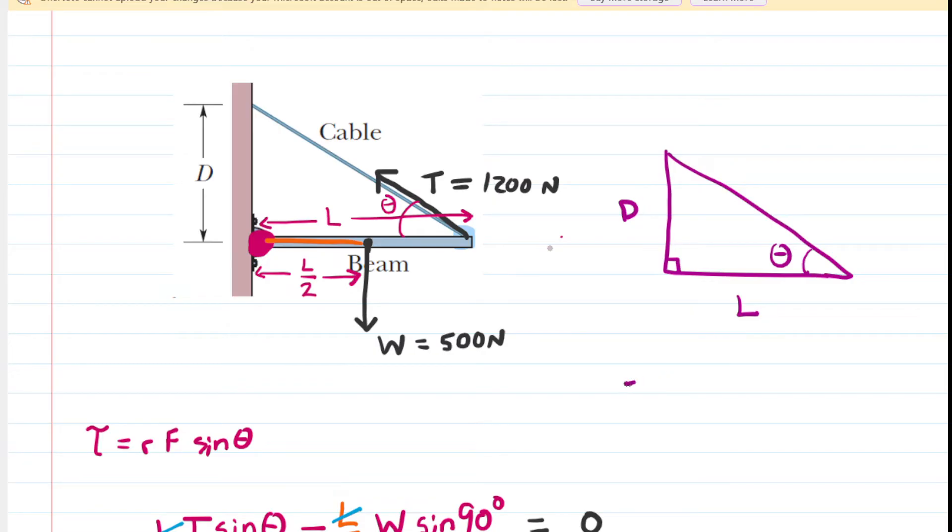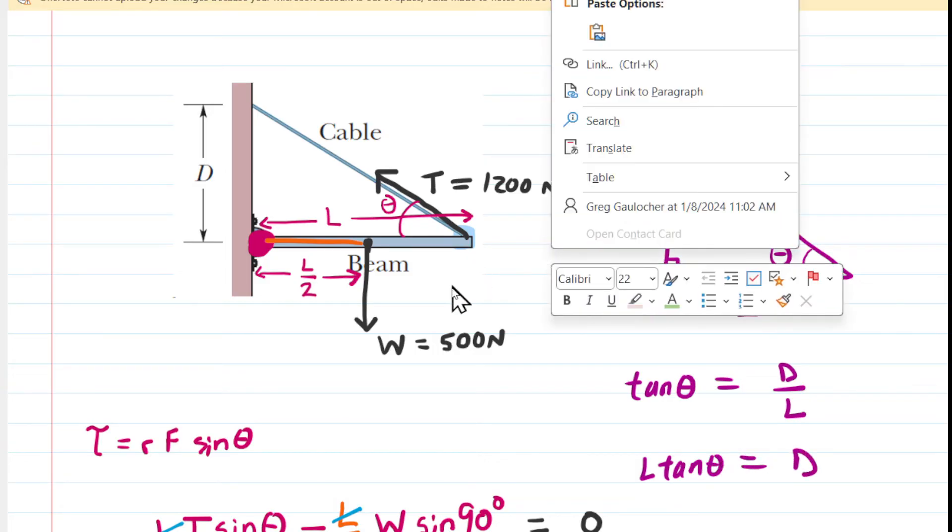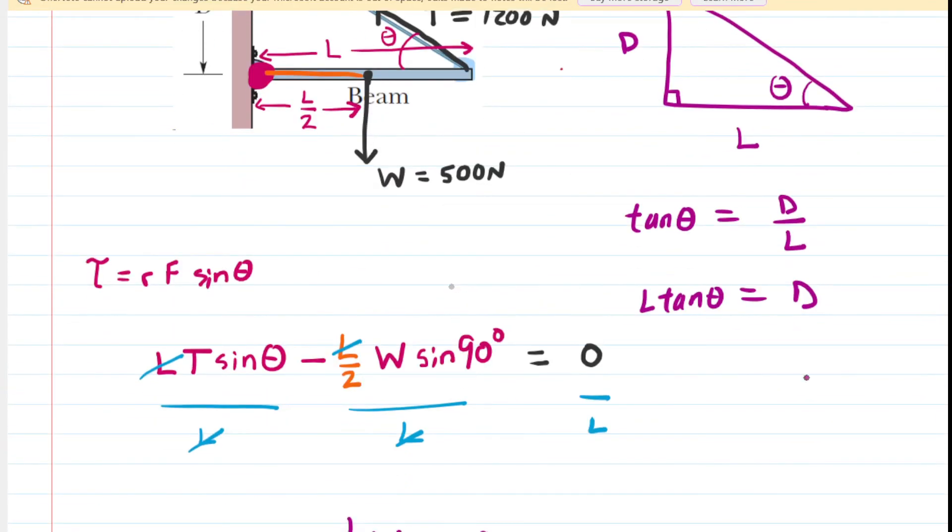We can see from this right triangle that the tangent of our angle theta is going to equal the opposite divided by the adjacent. Multiply both sides by L. You have L tangent theta is equal to d. Now the length of the beam was given in the question. It was 3 meters, and then we can go ahead and plug in theta. And simplifying this expression gives us an answer of approximately 0.64 meters. So this is the value of d. This is the correct answer to part A of the question.